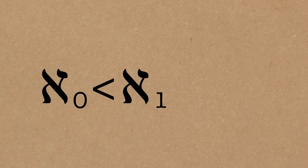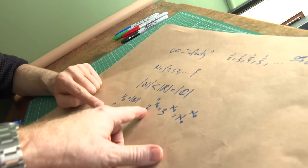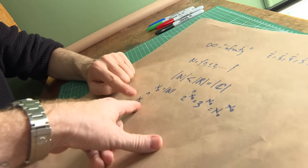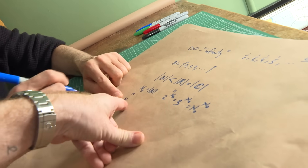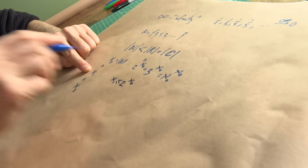Cantor noticed there are two ways to generate larger infinities, which is why we have the subscript 0. There's Aleph-1, which is the next largest infinity — nothing lies between Aleph-0 and Aleph-1. Next to that we have Aleph-2, with nothing between them. So 2 to the Aleph-0 — since it's larger than Aleph-0 — we have that Aleph-1 is less than or equal to 2 to the Aleph-0.